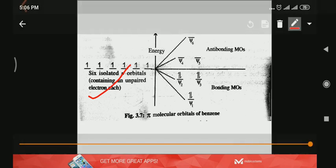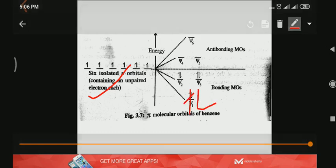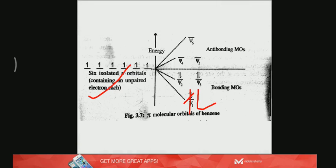We fill two electrons in the pi 1 MO, then the third and fourth electrons here, then pairing here and pairing here. Now electrons are over - six pi electrons are filled in all the bonding MOs. There is no electron to be put in the anti-bonding orbital.